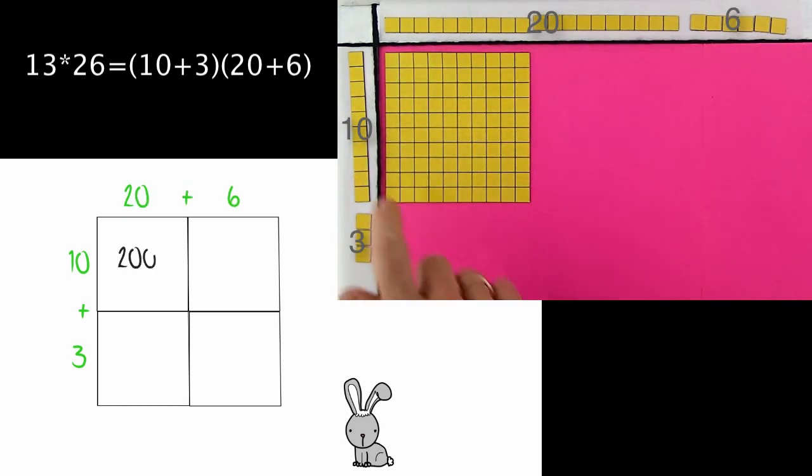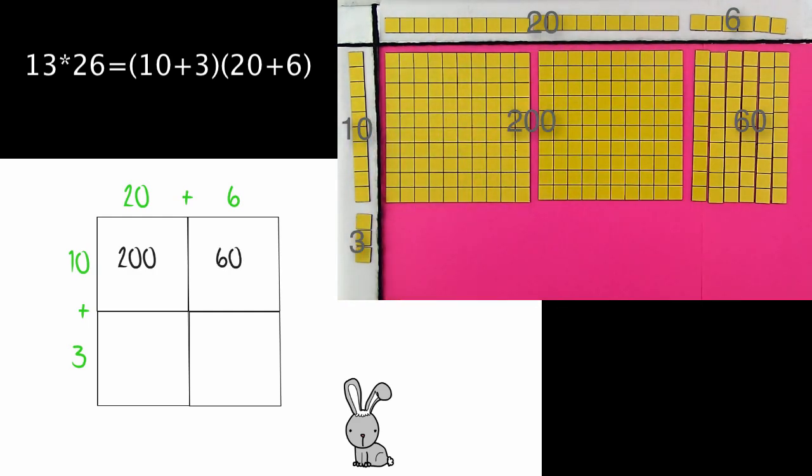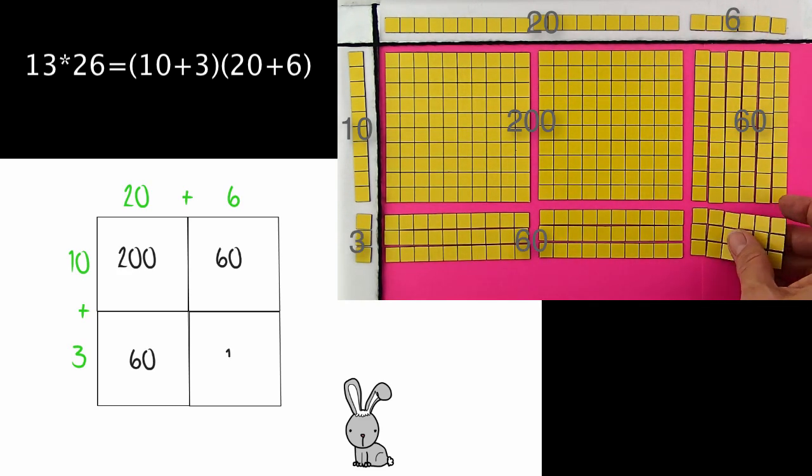20 times 10 is 200. 6 times 10 is 60. 3 times 20 is 60, again. And 6 times 3 is 18.